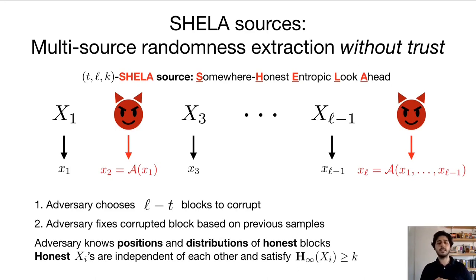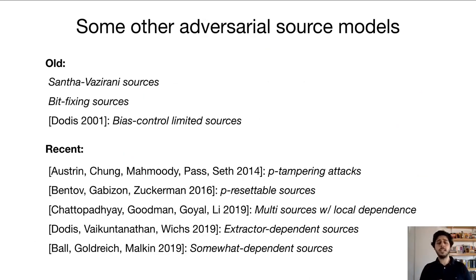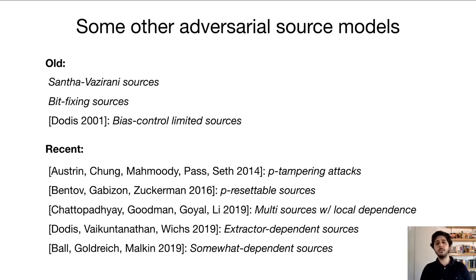Throughout this whole process, the adversary knows the positions and the distributions of the T honest blocks, and these blocks are all independent of each other and have k bits of min entropy. Although we motivate this with multi-source extraction, the model for SHELA sources is also a very natural model for randomness extraction from the blockchain. SHELA sources fit very naturally into the long line of research on adversarial source models, which started with seminal works on Santha-Vazirani sources or bit-fixing sources, and has seen renewed interest with many recent papers, including another paper at Eurocrypt. The SHELA source model and the type of results we obtain are incomparable to those works, so for the rest of the talk I'll show you what kind of new perspectives we bring to this topic.